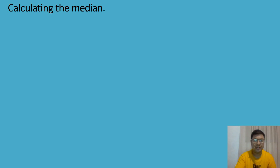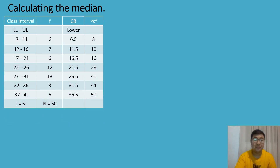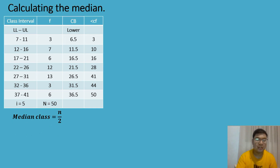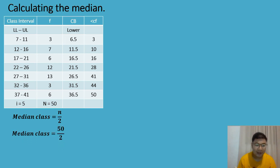To calculate the median, we need the following data in our frequency distribution table: the class interval, the frequency, the lower class boundary, the less-than cumulative frequency, the class width equal to 5, and the total number of frequency equal to 50. The next step is to determine the median class using the formula n over 2. Our n, the total number of frequency, is equal to 50, so dividing gives us 25.